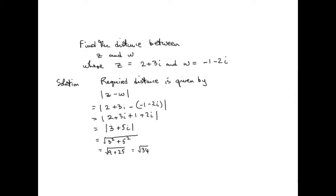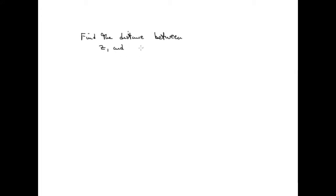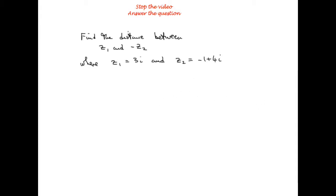One last example. This time find the distance between z1 and negative z2, where z1 equals 3i and z2 equals negative 1 plus 4i. Stop the video and see how you get on with that one.